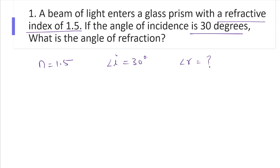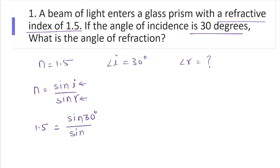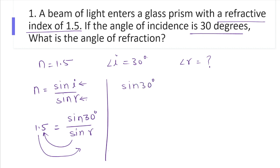In the last video we discussed the formula for refractive index: n = sin I / sin R, where I is the angle of incidence and R is the angle of refraction. Substituting the values, 1.5 = sin 30° / sin R. Rearranging, we get sin 30° / 1.5 = sin R.